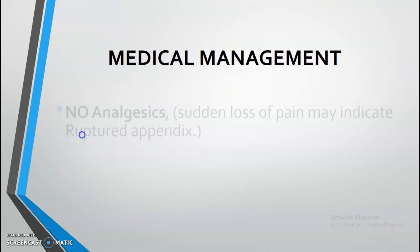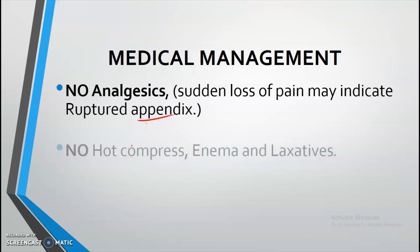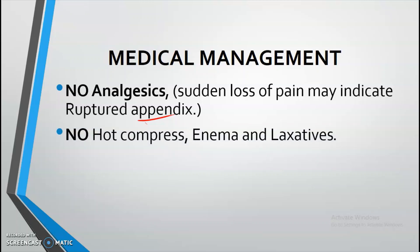For management, do not give any analgesics or pain relievers, because analgesics decrease pain sensation — and a sudden loss of pain may actually indicate a ruptured appendix. We might mistakenly think the patient is improving when in fact the appendix has already ruptured. Also, do not give hot compresses, enemas, or laxatives, because these increase gastric motility and may lead to a ruptured appendix.